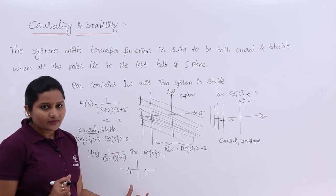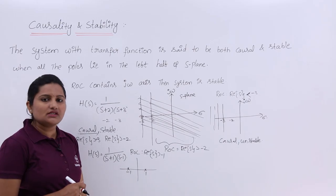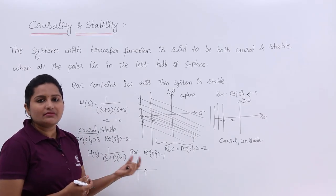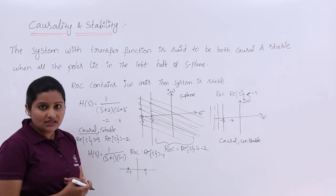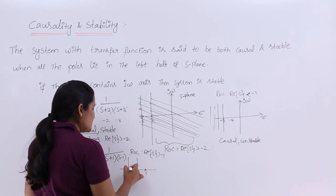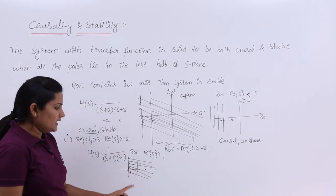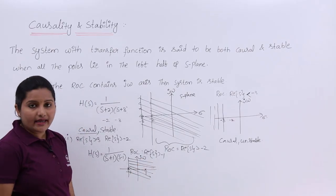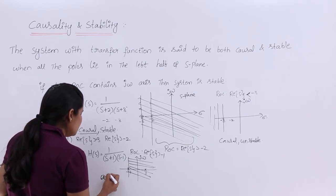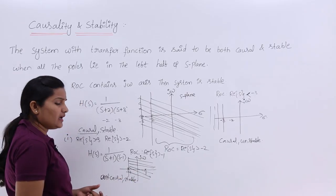Since one pole has shifted to the right half of the S-plane, the system is not causal — we can say the system is anti-causal. For a system to be causal, all poles must lie in the left half of the S-plane. However, the ROC Re(S) > -1 does include the jω axis, so the system is stable. Therefore this system is anti-causal but stable.